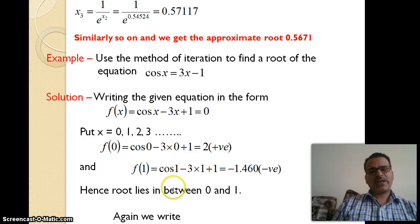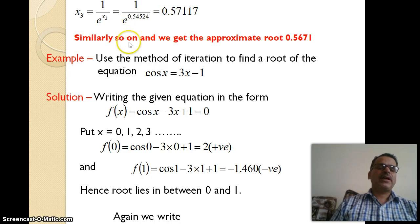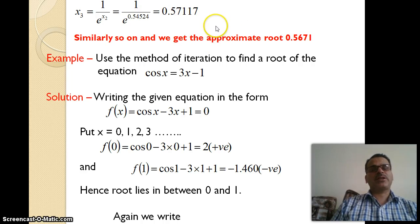The second approximation is put in the third: e^(-x₂), then x₄, x₅, x₆. We repeat the process of iterative methods until two approximations are equal. Similarly, we get the approximate root 0.5671.